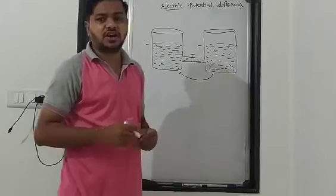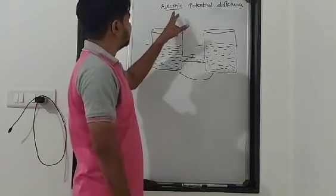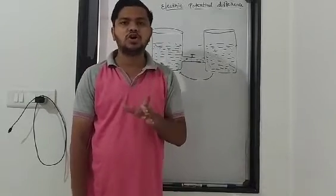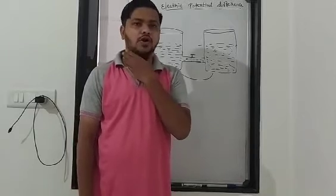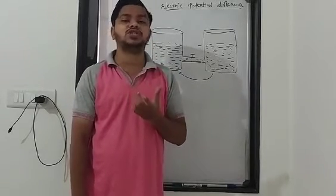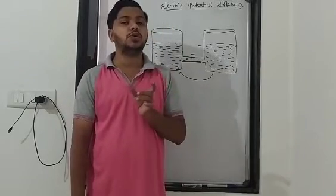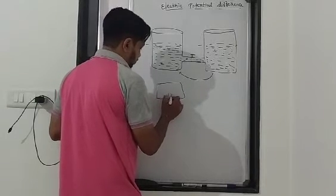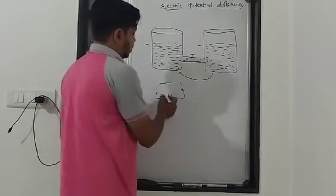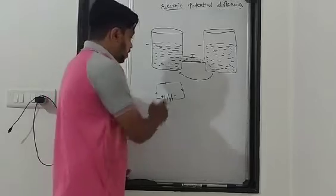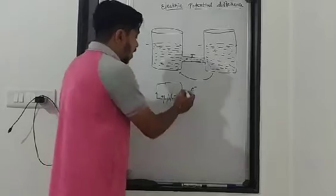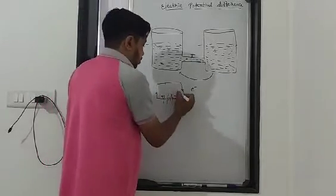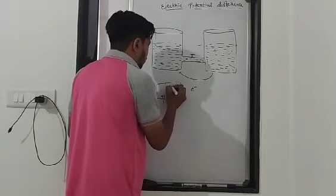Like that, for flow of electric current, there should also be an electric pressure difference, which is known as electric potential. If there is an electric potential difference, then and only then will the electric current flow. That is why you can see a plus and a minus on a battery — that plus and minus is the electric potential difference, and because of that the electric current flows from positive to negative, which is the conventional direction of electric current. Electrons actually flow from negative to positive.